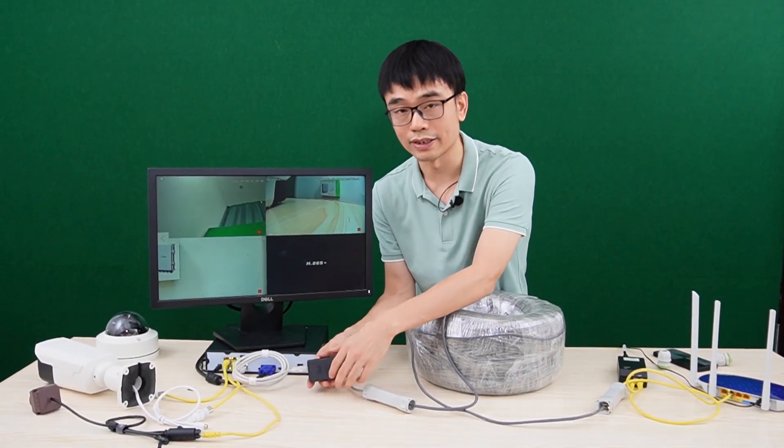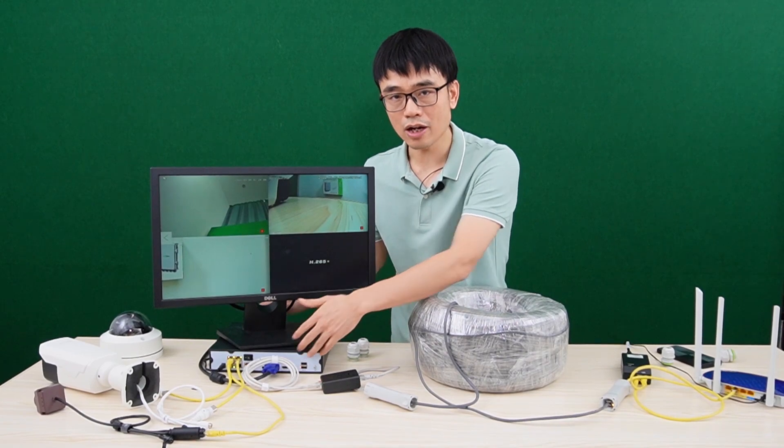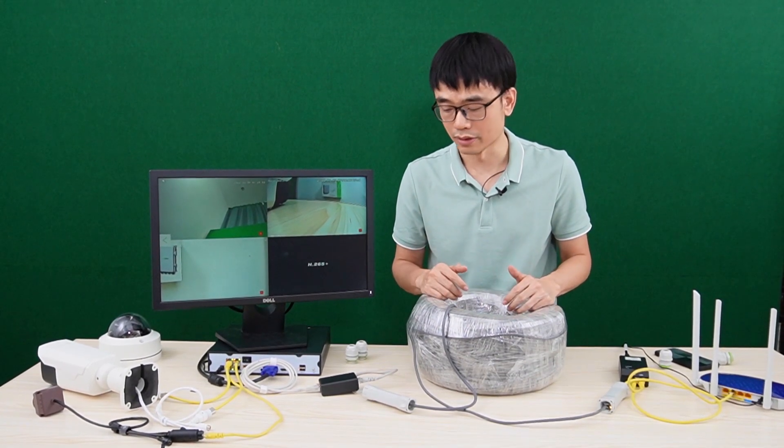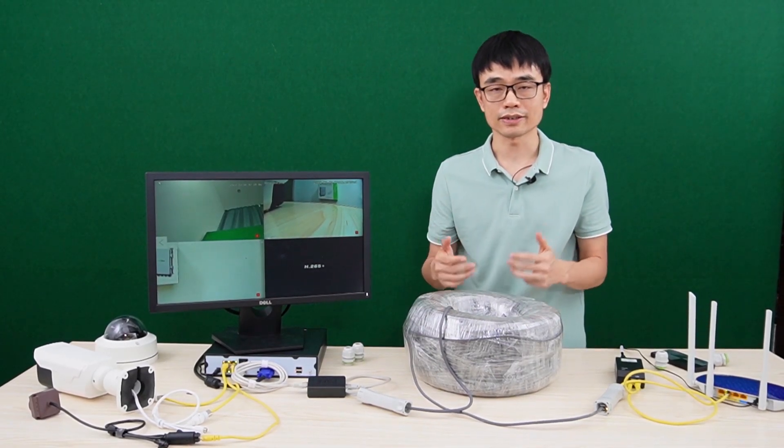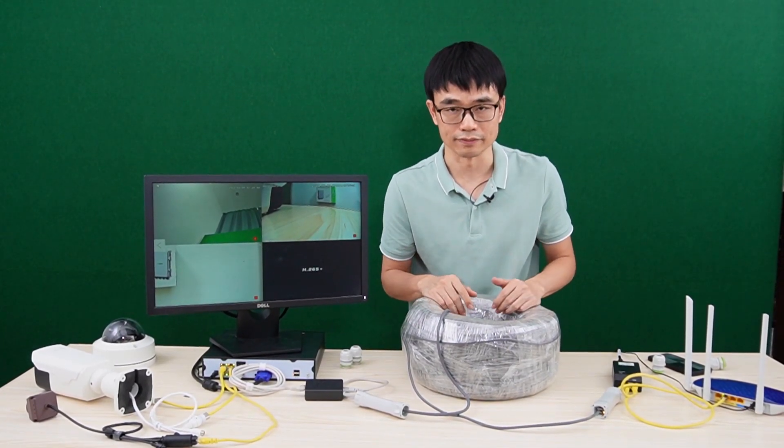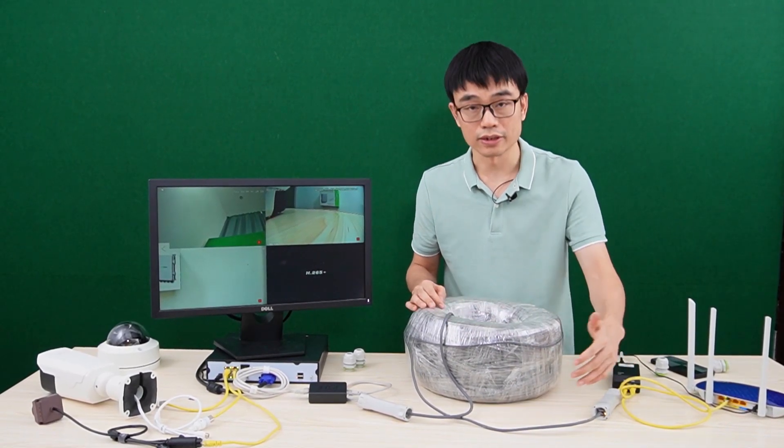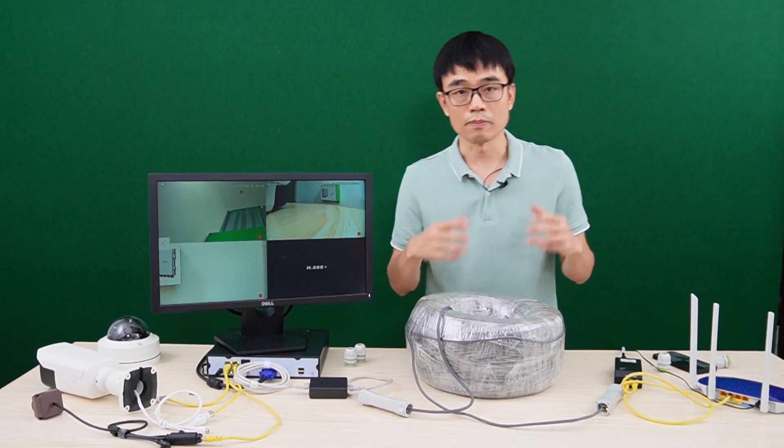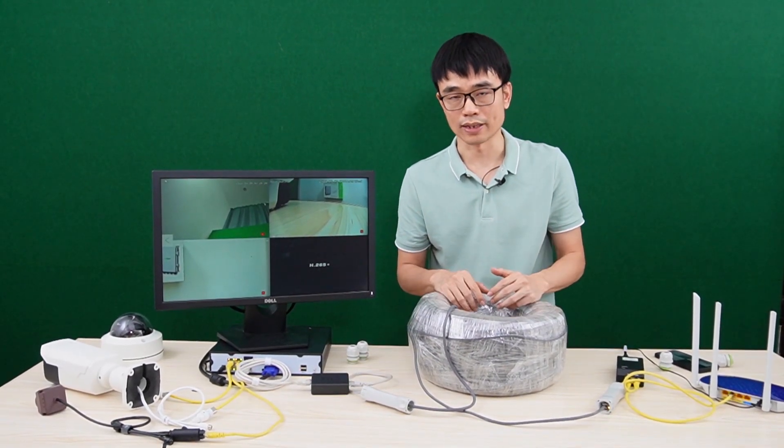But you may wonder why we need this PoE splitter. The NVR only needs data, right? It doesn't need the power. It's not the IP camera. So why we need this PoE splitter? The reason is because in the standard PoE system, there's always power handshaking. Before this PoE injector injects power to this cord, you need to make sure the final device is a PoE compatible device, like an IP camera or access point.